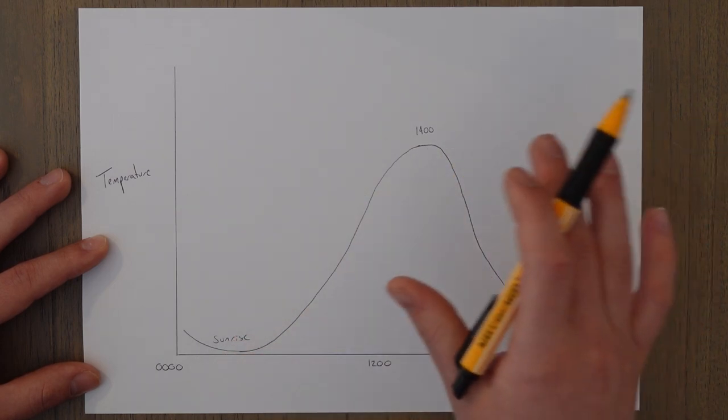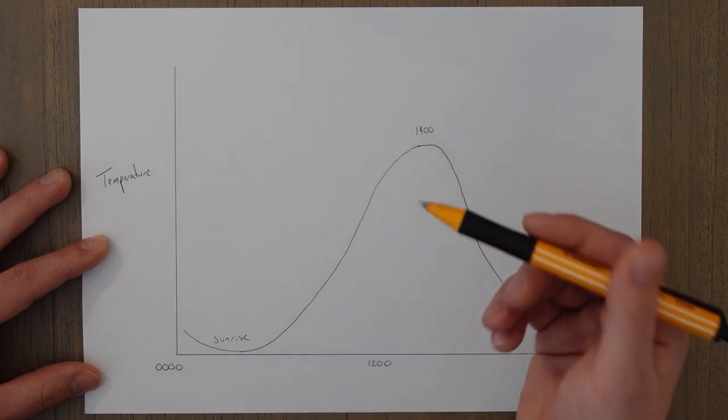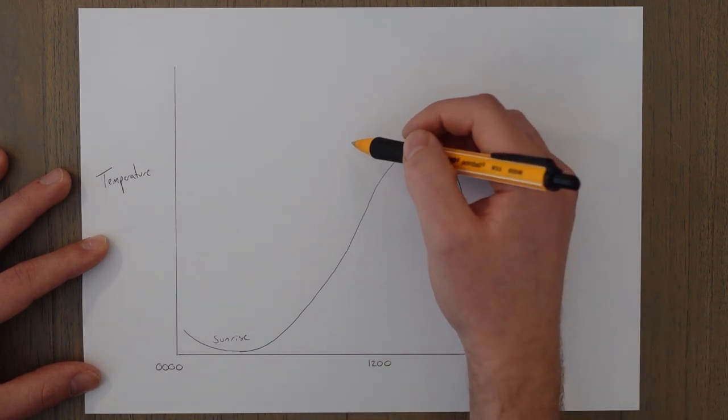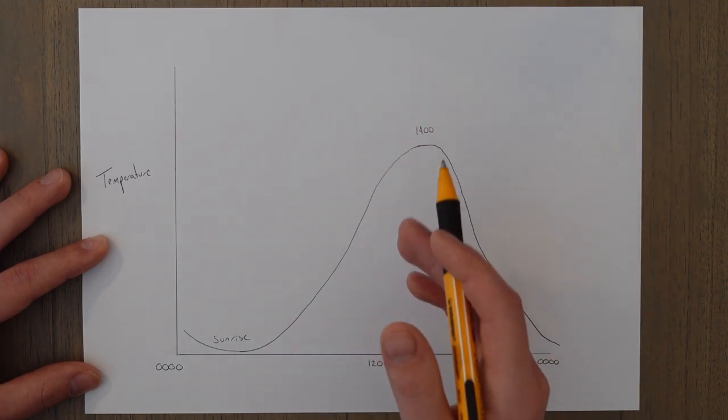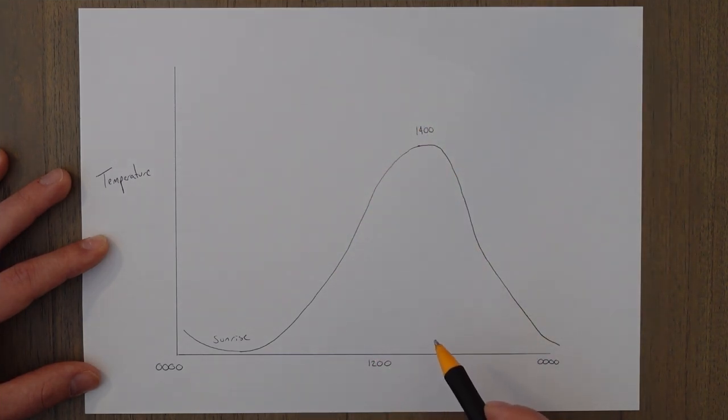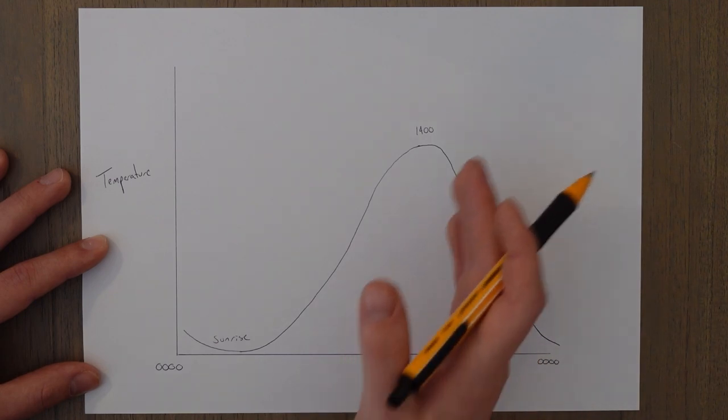Clouds can also affect the variation of temperature throughout the day. If it's cloudy at midday then some of the sun's rays are reflected off and not as many reach the surface, which means that there's less of a heating process of the surface and much less heat is radiated out.